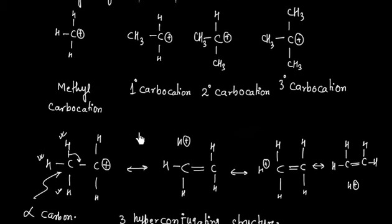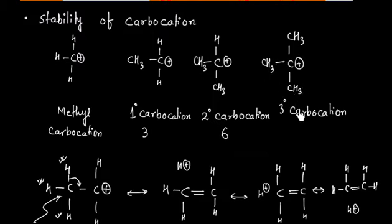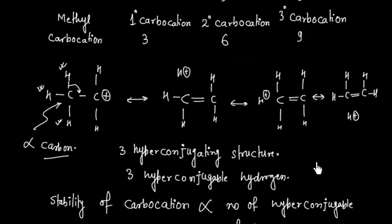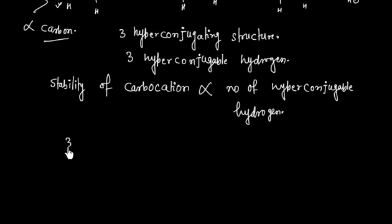In the case of a primary carbocation, we have three alpha hydrogens. For secondary, we have three plus three — six hyperconjugable hydrogens. For tertiary, we have three plus three plus three — nine hyperconjugable hydrogens. For methyl, we have none. So tertiary carbocation is the most stable, followed by secondary, then primary, and methyl carbocation is the least stable.